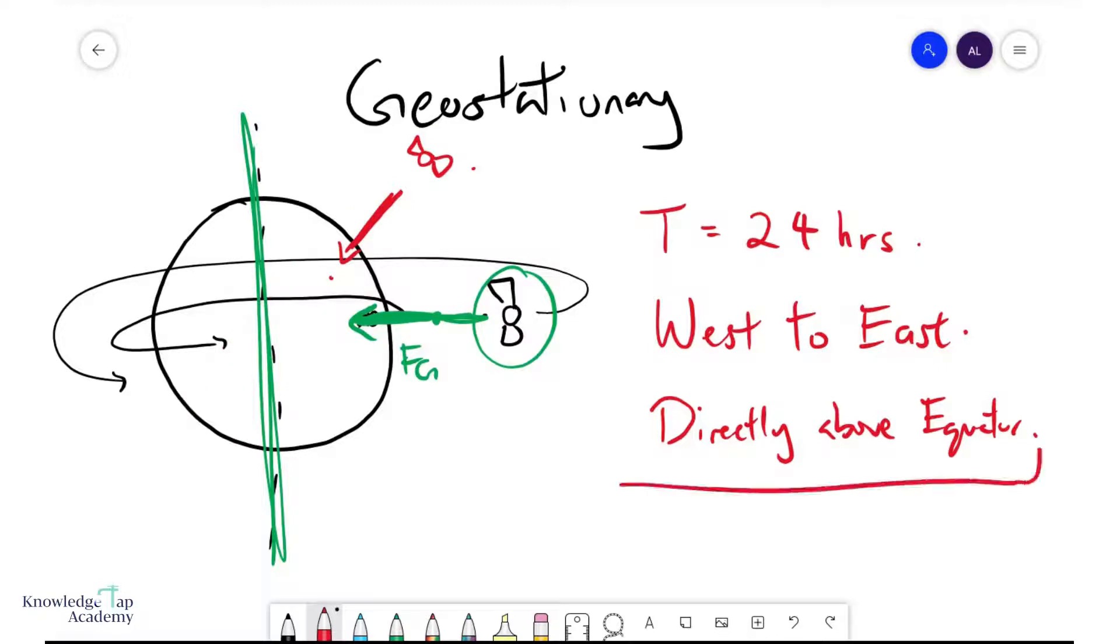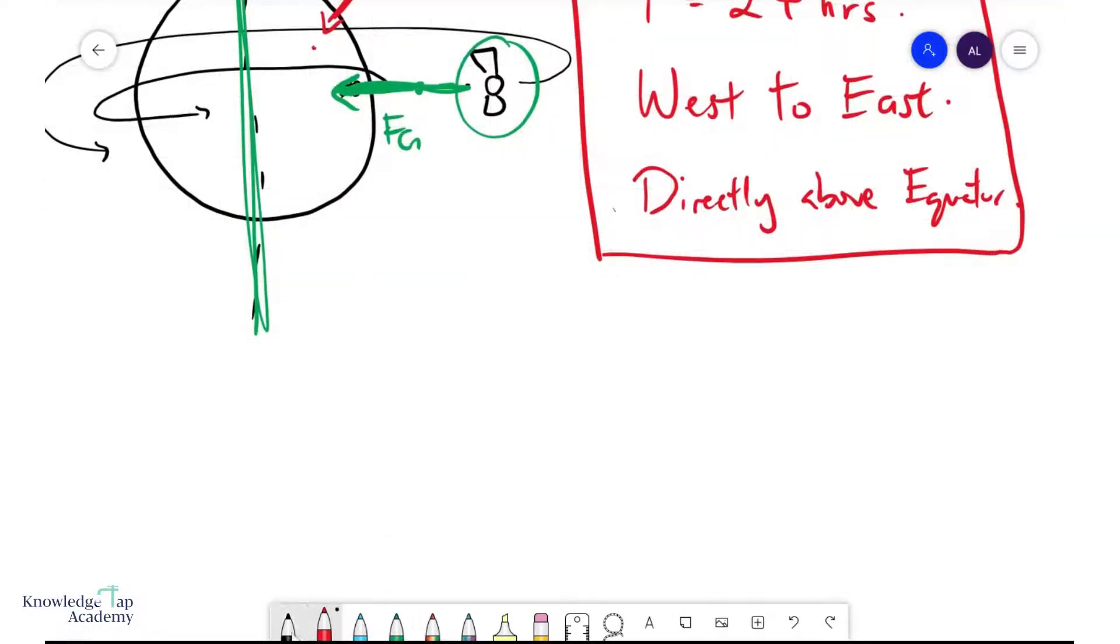And so these are the conditions for geostationary satellites. Just also bear in mind that geostationary satellites have very high orbital orbits, almost 42,000 kilometers. This is like six or seven times the radius of the Earth.